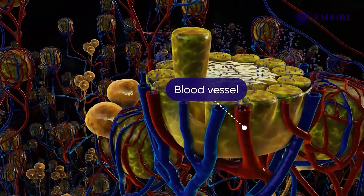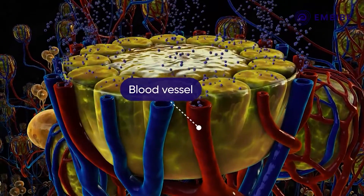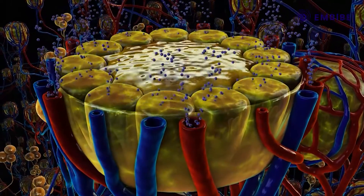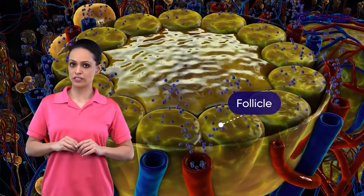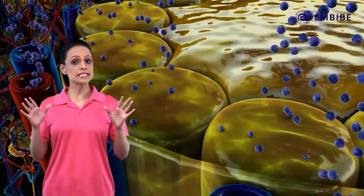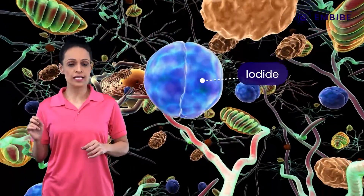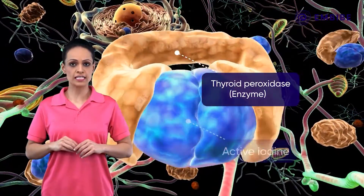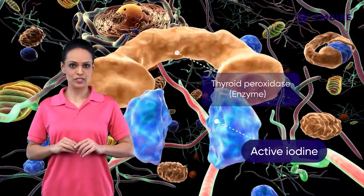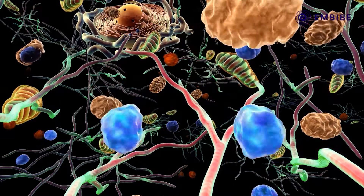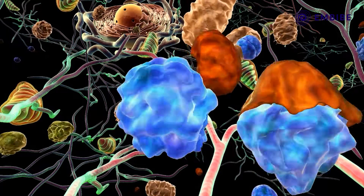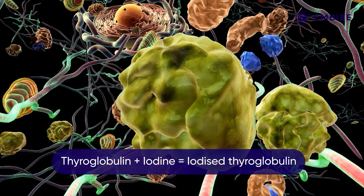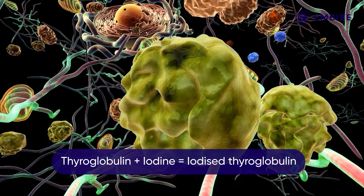There are blood vessels surrounding the follicular cells. These arteries release iodides, which are absorbed by the follicles. Once inside the follicular cells, the iodide ion is oxidized by an enzyme, thyroid peroxidase, to form active iodine. Inside the follicular cells, thyroglobulin is also synthesized, which then couples with active iodine and forms iodized thyroglobulin.